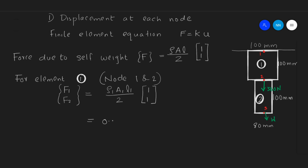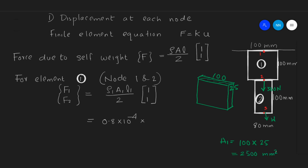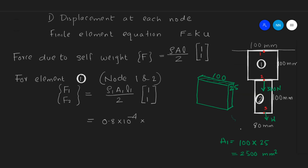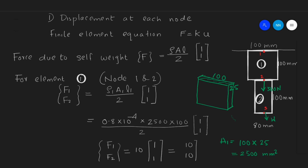The weight density is 0.8 × 10⁻⁴ N/mm³. The area of element 1 is 100 (width) into 25 (thickness), which is 2500 mm². Substituting the values: 0.8 × 10⁻⁴ into 2500 into 100 divided by 2, which yields the force matrix [F1, F2] equal to [10, 10] Newton.